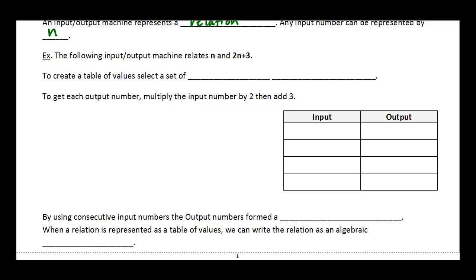We're going to create a set of input values or input numbers. Now of course, we get to choose whichever numbers we want. Our input here is going to represent n, and our output is going to represent 2n plus 3. So since we get to choose whatever input values we like, I'll just choose 1, 2, 3, 4.